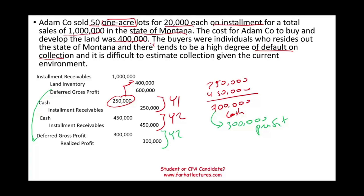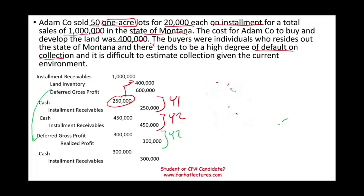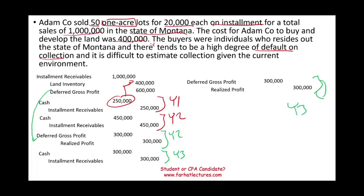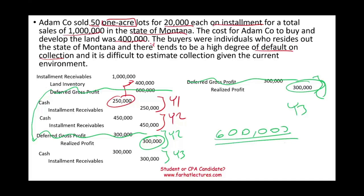In Year 3, we received cash of $300,000 — debit cash, credit installment receivable. Going forward, any cash we receive is profit, so we also book another $300,000 in profit in Year 3. In total, we booked $600,000 in profit on the income statement, and the deferred gross profit account is now gone. Adam was lucky enough to collect all the money and recognize all the profit by Year 3.